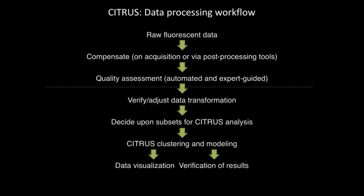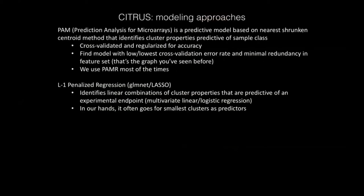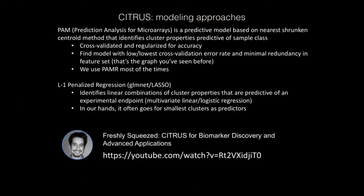We cannot cover everything with one parameter selection, and as with any modeling, we try to verify our Citrus results with alternative approaches — we don't take it straight from Citrus to submission. Citrus offers several modeling approaches outlined by Chenjin. In our hands, we found PAM — prediction analysis for microarrays — the most helpful, and these results agreed best with other statistical analyses performed outside of the Citrus pipeline. There's another predictive model, LASSO, which in our hands tends to select the smallest clusters as predictors, and since hierarchical clustering in Citrus can sometimes be a bit sloppy, results often look like we're pulling answers from over-clustering or low-specificity clusters. We found the LASSO method less useful in this regard.